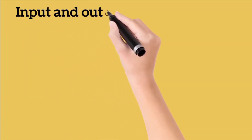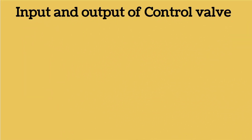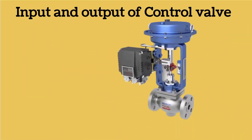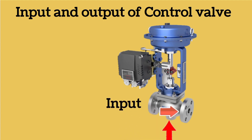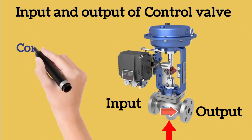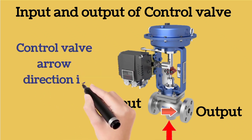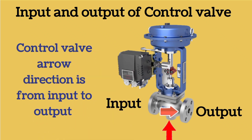Now let me explain the inputs and outputs of a control valve. You can see an arrow on the control valve. Its direction is from left to right. Its input is at the starting point of the arrow, meaning at the left side. Its output is at the end point of the arrow, meaning at the right side. So it is very easy to understand the input and output of any control valve. Control valve direction is from input to output.